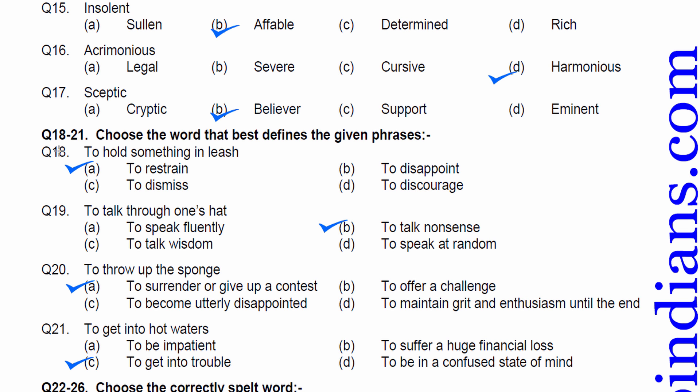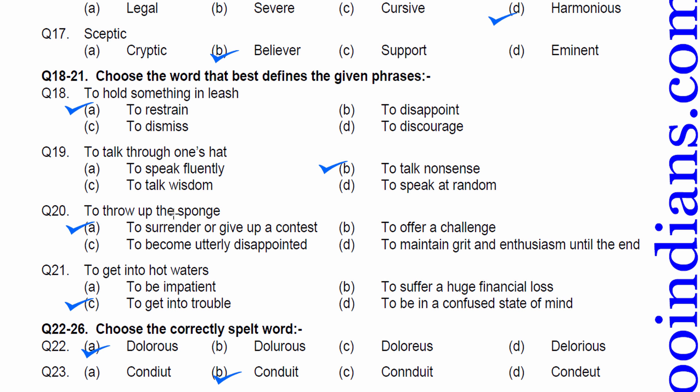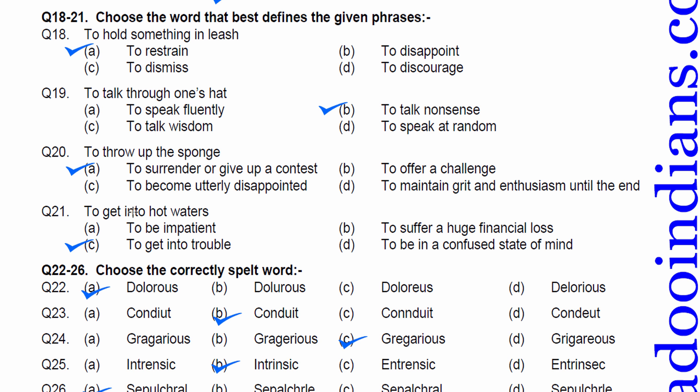Eighteen to twenty-one. Choose the word that best defines the given phrases. To hold something in leash. To restrain. That is, something is holding you back. Resisting you from doing something. Therefore, to restrain would be your answer. Nineteen. Talk through one's head. To speak irrelevant things. To speak nonsense. Therefore, B is correct. Twenty. To throw up the sponge. This is referred to surrendering. To surrender or give up a contest. Therefore, A part is correct. Twenty-one. To get into hot waters. Is to get into trouble. Therefore, option C is correct here.